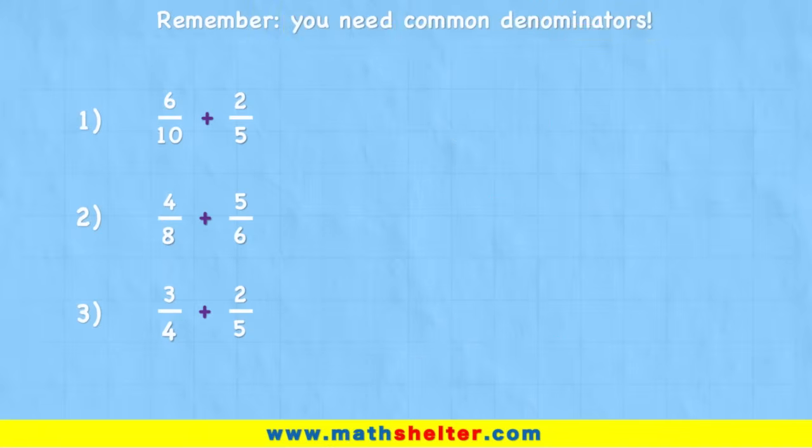So now when we look at this first example, six tenths added to two fifths, we can see that we have a denominator of 10 and a denominator of five. But we were told the denominators have to be the same. So we have a problem. How are we going to solve it?